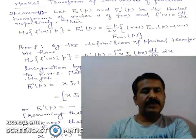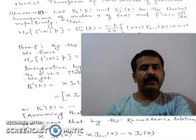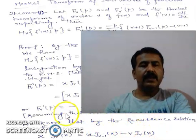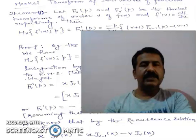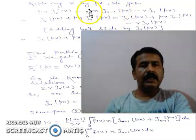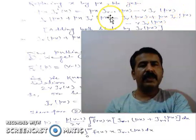Assuming x·f(x) becomes 0 as x tends to 0 and as x tends to infinity. Now using the recurrence relation of the Hankel transform: x·j'_v(x) equals x·j_{v-1}(x) minus v·j_v(x). Now replacing x by px in this recurrence relation, we get p·x·j_{v-1}(px) minus v·j_v(px).